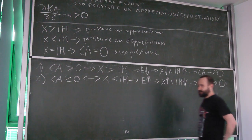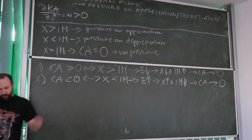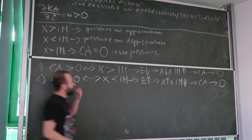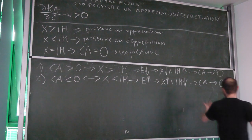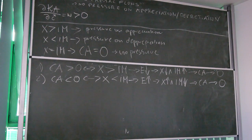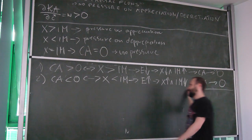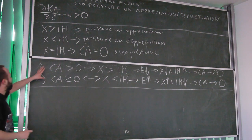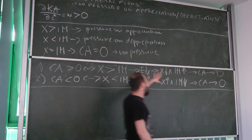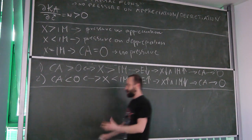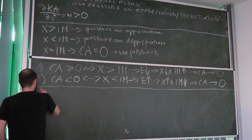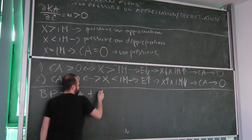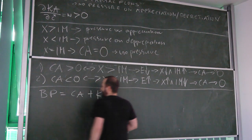So as you see, written into the currency market is this self-correcting mechanism. But we need to remember that the Balance of Payments is not made just out of the current account — it's made out of both accounts: current account and capital account.